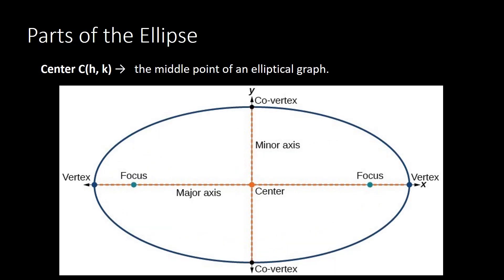Let us go over the different parts of the ellipse. First, we have the center, which uses h and k as its coordinates. The center is defined as the middle point of an elliptical graph — it is right in the middle of your ellipse.